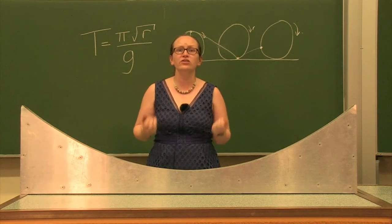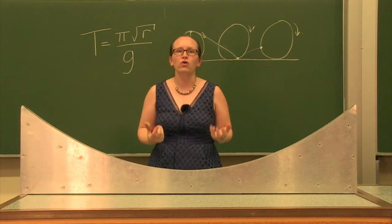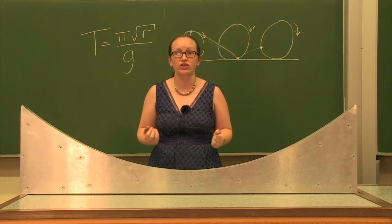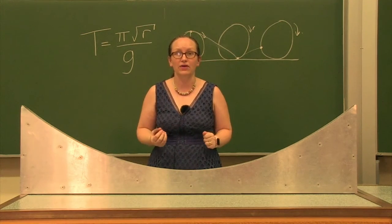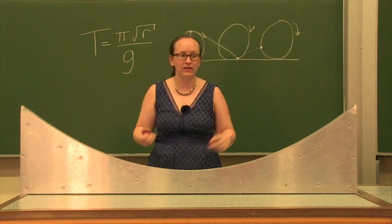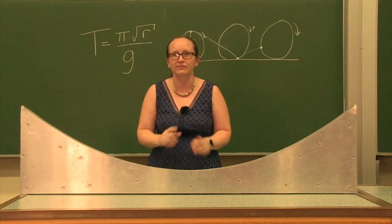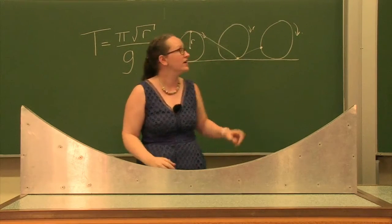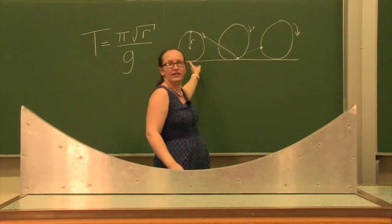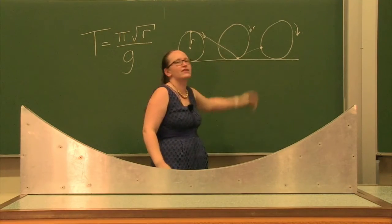OK, so you've seen lots of pendulums, which were all types of simple harmonic motion. Another type of simple harmonic motion is a ball rolling along a cycloid curve. Now, a cycloid curve is a really special type of curve. It's generated by rolling a disk along a flat surface